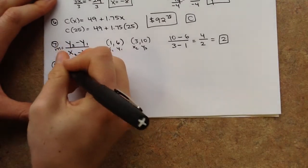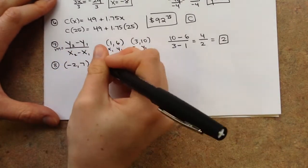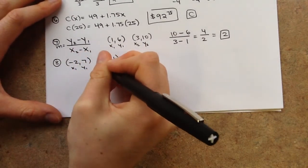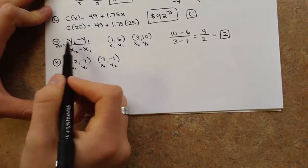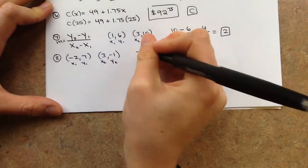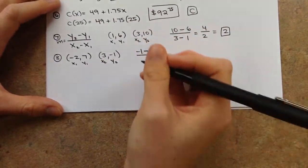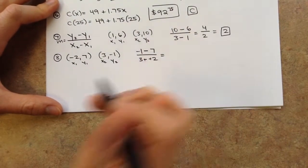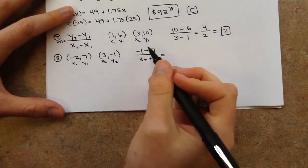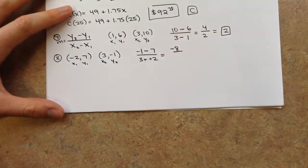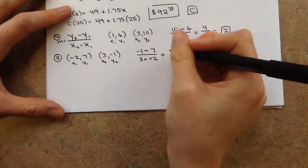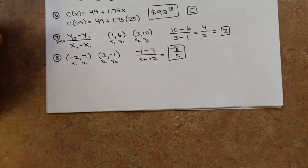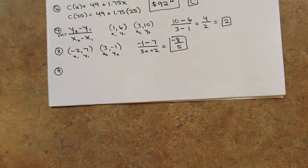Number 8: two more ordered pairs with negatives. Let (negative 2, 7) be (x1, y1) and (3, negative 1) be (x2, y2). So m equals (negative 1 minus 7) over (3 minus negative 2). Be very careful with minus and negative — change to plus a positive. Negative 1 minus 7 is negative 8, and 3 plus 2 is 5. So the slope is negative 8 over 5, which is negative 1 and 3 fifths.